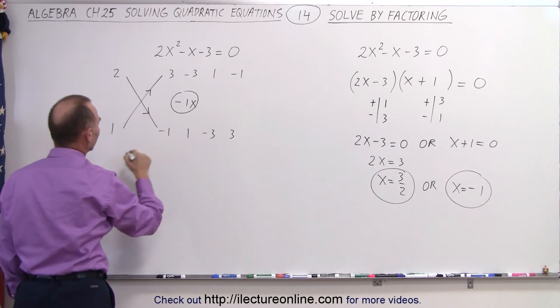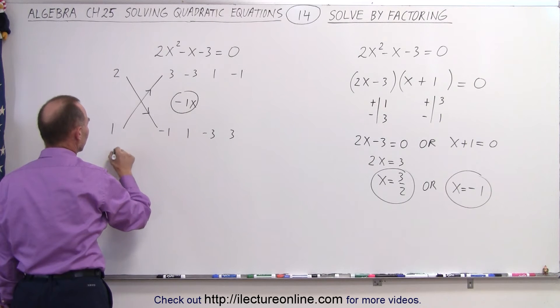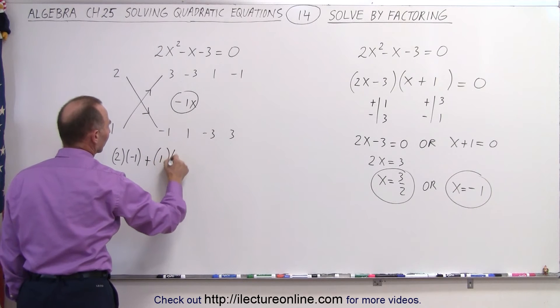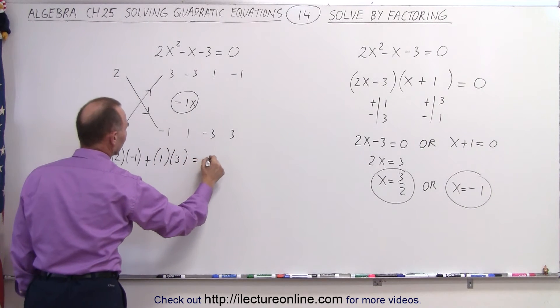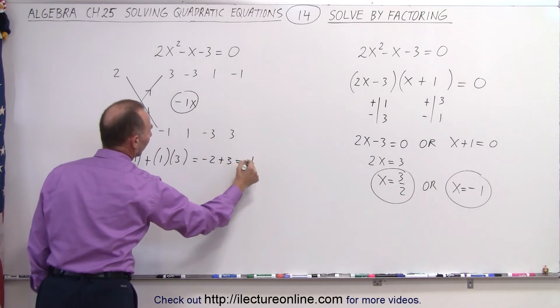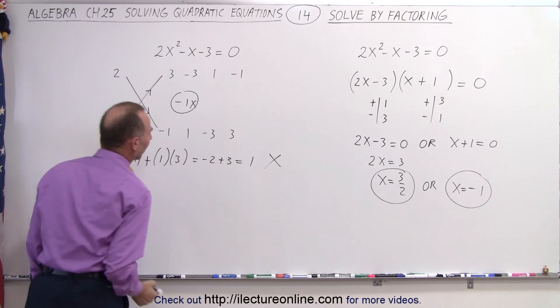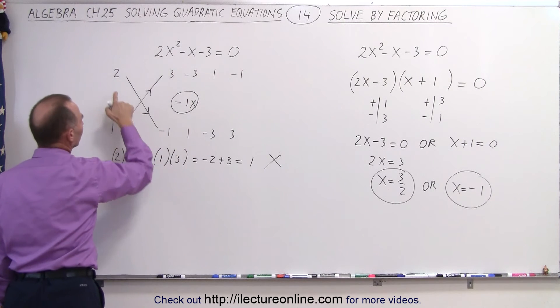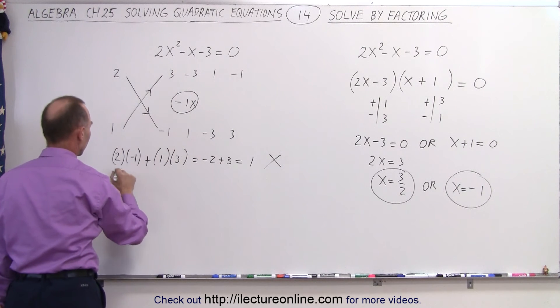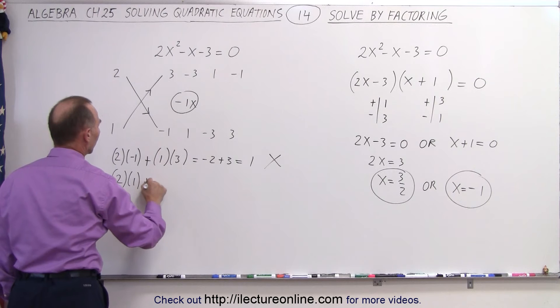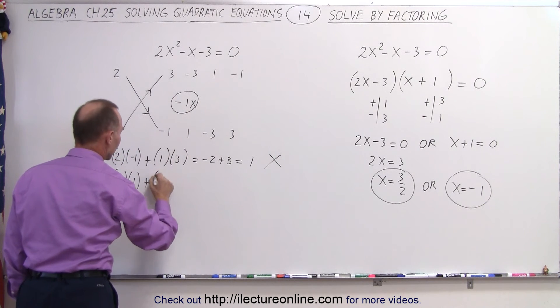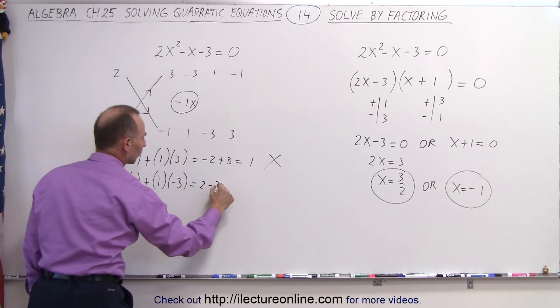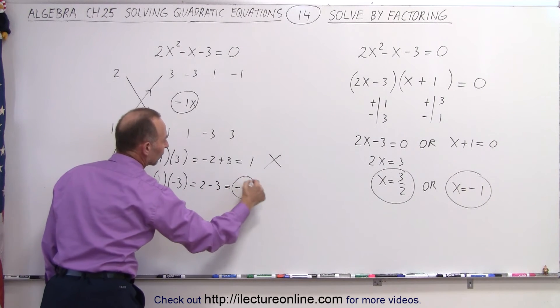So 2 times a negative 1 is a negative 2, so 2 times a negative 1 plus 1 times 3, 1 times 3 gives us a negative 2 plus 3, which is a positive 1, so that is not a solution. All right, let's try multiplying these times the second column, so 2 times a positive 1 plus 1 times a negative 3. 1 times a negative 3, that gives us 2 minus 3, which is negative 1, and that's what we're looking for.